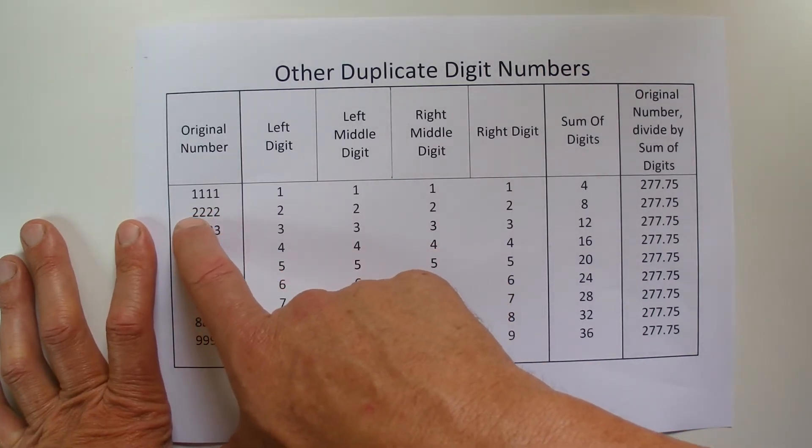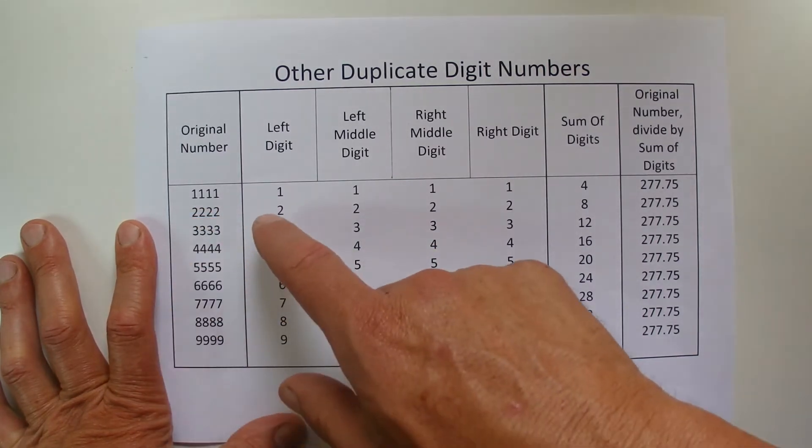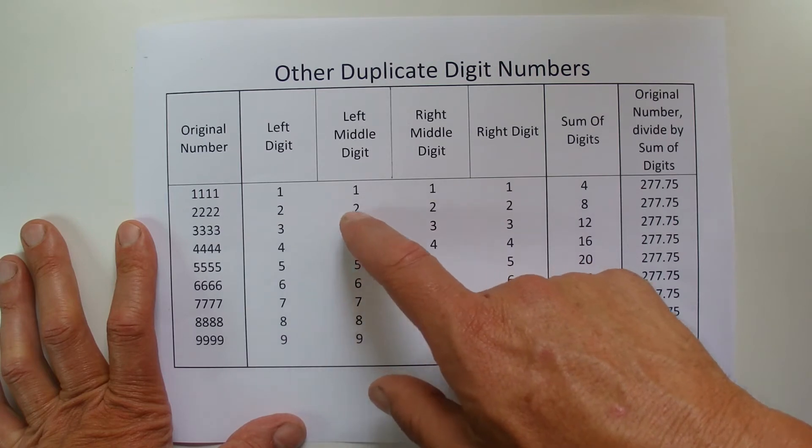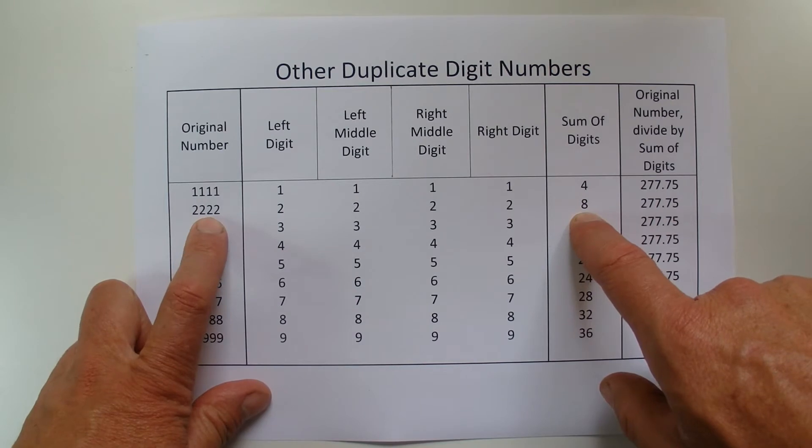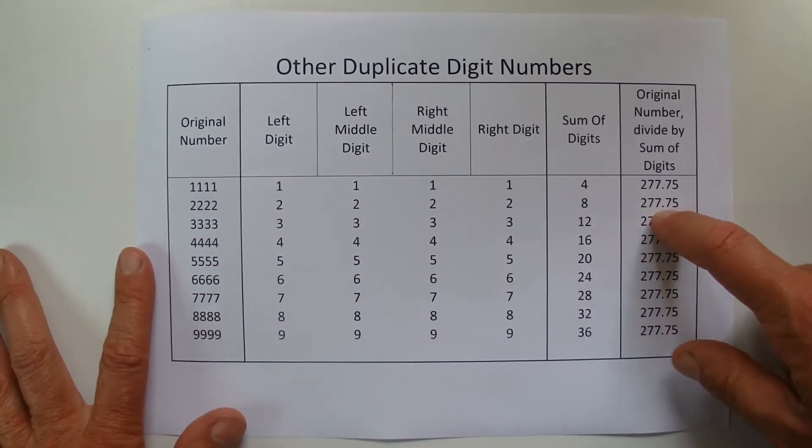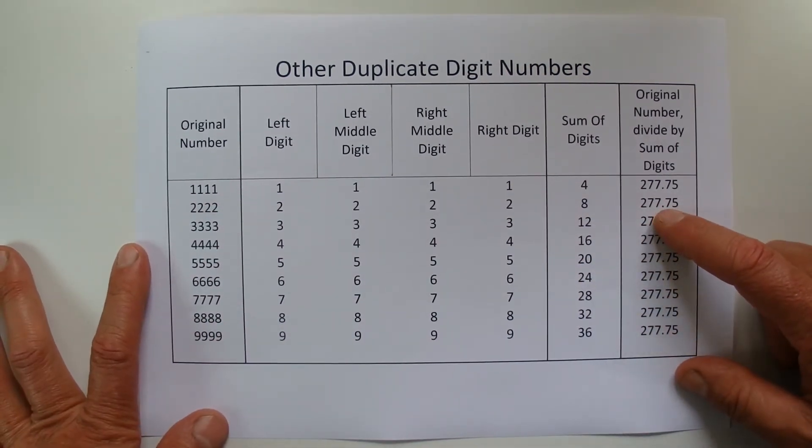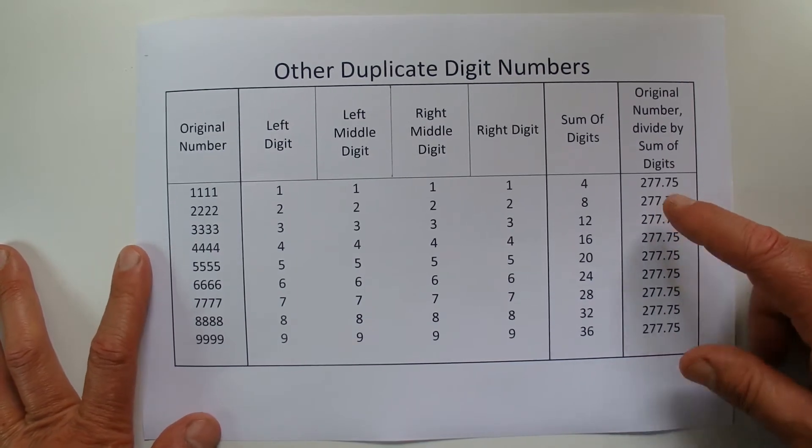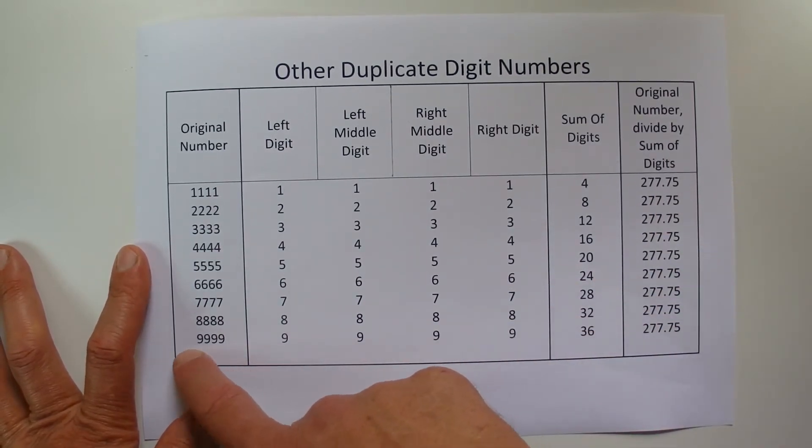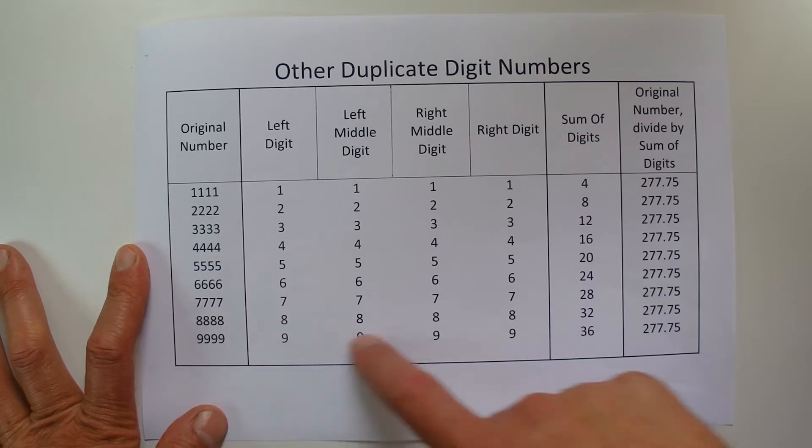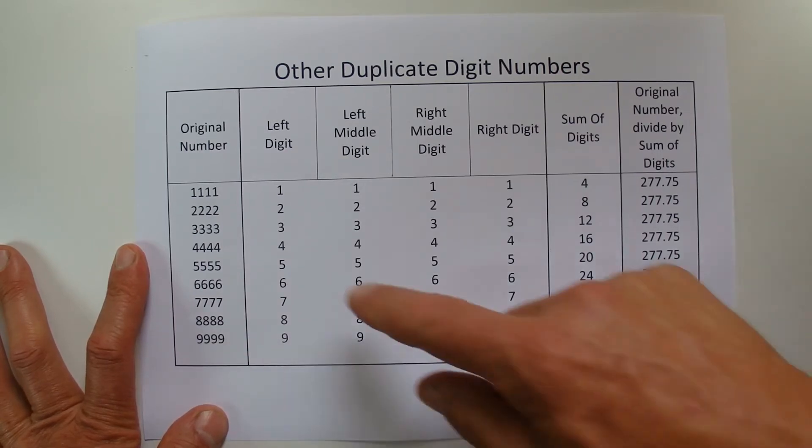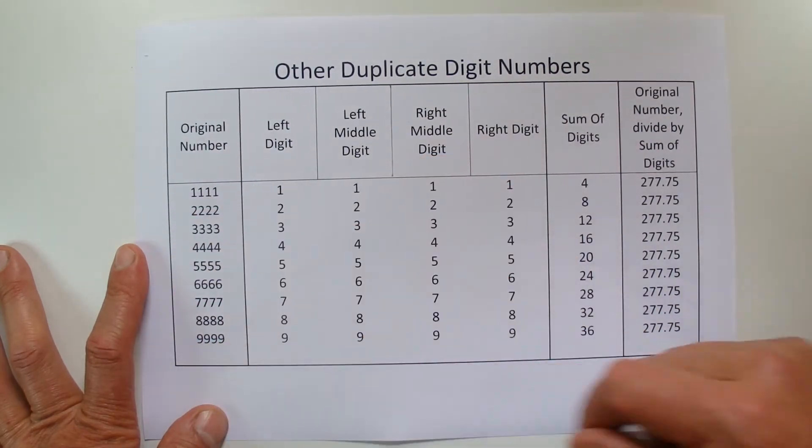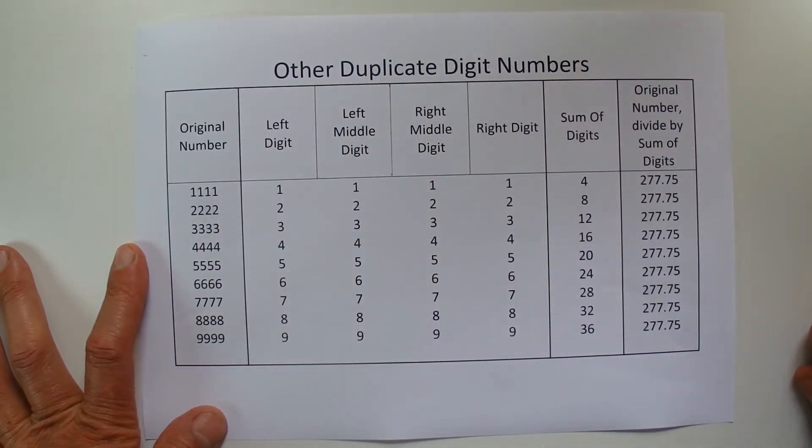So I've just worked through one of those, 2,222. We add the 2 plus the 2 plus the 2 plus the 2 equals 8, and we take the 2,222 divided by 8, and it gives you 277.75. And you'll get the same answer if you do that same principle for 9,999. It will also equal 277.75, and the same answer for all 10 of those duplicate digit numbers.